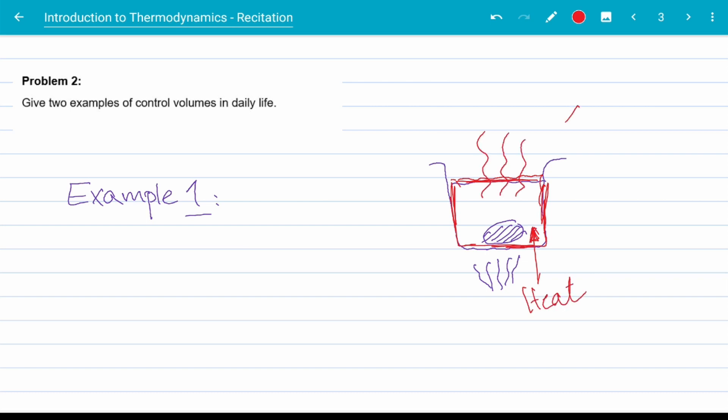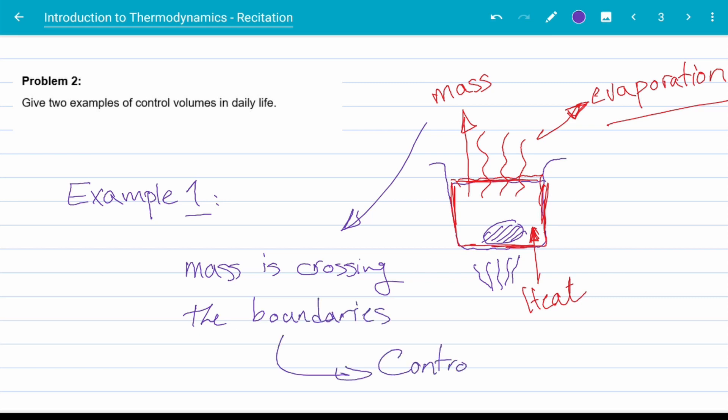First example is when we are boiling some eggs. When water reaches the boiling point, some of it starts to evaporate and leave the system, which is drawn here on the right. So mass is crossing the boundaries and so this system of pot, eggs and water is a control volume.